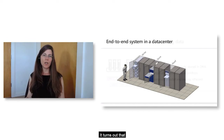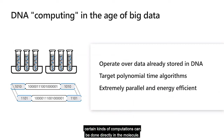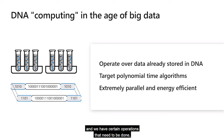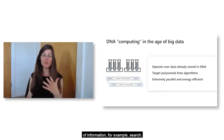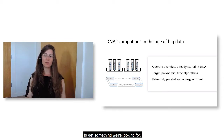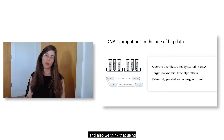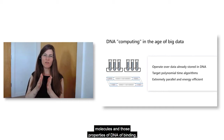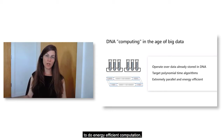It turns out that certain kinds of computations can be done directly in molecules. We've stored a bunch of information in DNA and there are certain operations that need to be done over all of those pieces — for example, search. If we want to search a particular database, we may have to look at all the elements to find what we're looking for. We target these kinds of algorithms where parallelism can be quite helpful. Using molecules and the DNA binding properties — A binding to T and C binding to G — can enable energy-efficient computation, especially for search.